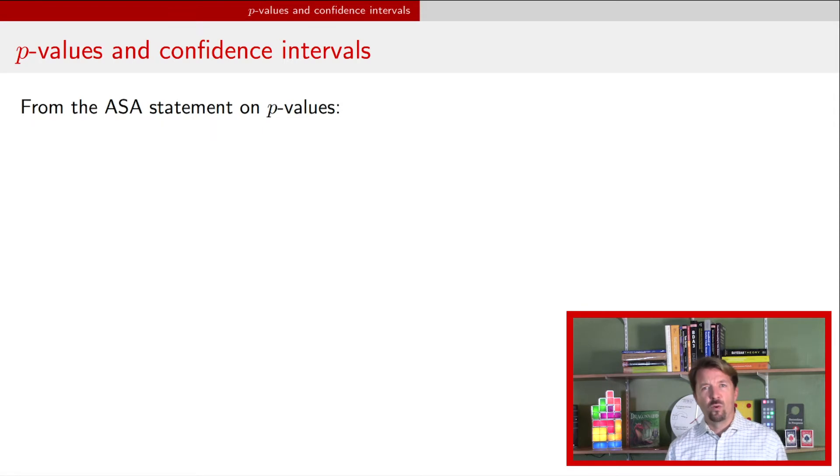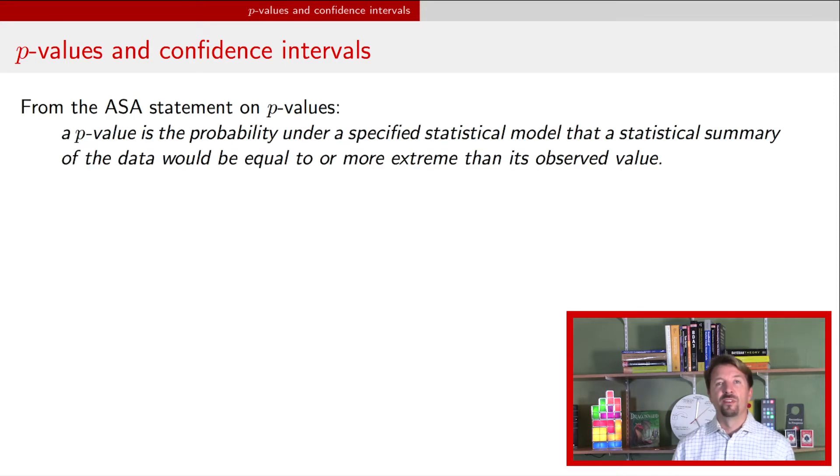As a quick reminder of what p-values are, here is the American Statistical Association statement informally on what p-values are. So a p-value is the probability under a specified statistical model that a statistical summary of the data would be equal to or more extreme than its observed value. This is very similar to the definition I've been giving in a couple of my videos. Basically, we have a statistic, that's the statistical summary. We have this as a more extreme region. We have the observed value, that's the statistic from the actual data. And then we have this specified statistical model, usually that's the model associated with the null hypothesis. So we construct this p-value and it gives us an indication of how incompatible the data are with the model.